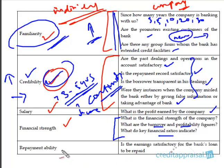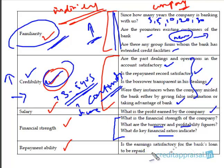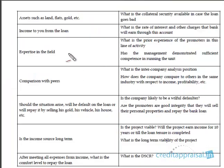Just as we assessed repayment ability for individuals, in the case of companies we assess whether the company's earnings and profits are satisfactory for the loan to be repaid. Specifically, we calculate something called the Debt Service Coverage Ratio (DSCR) to measure repayment ability.